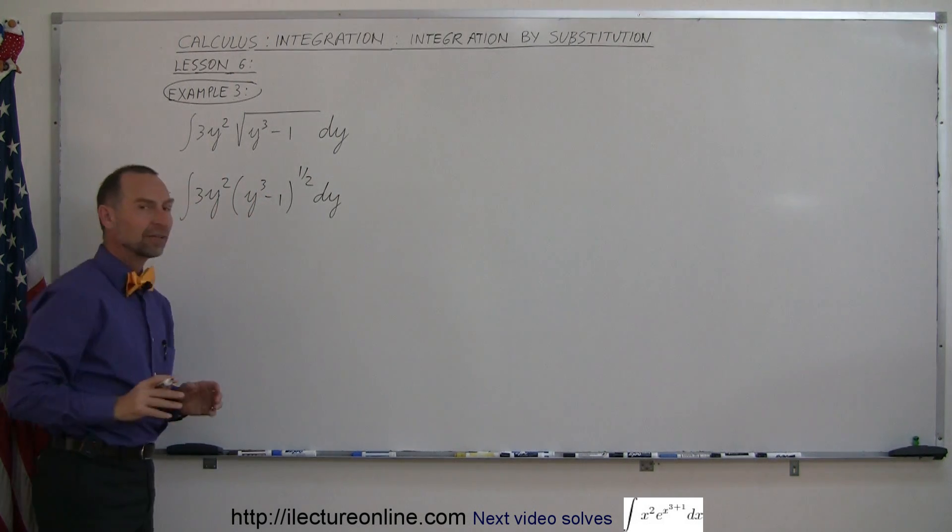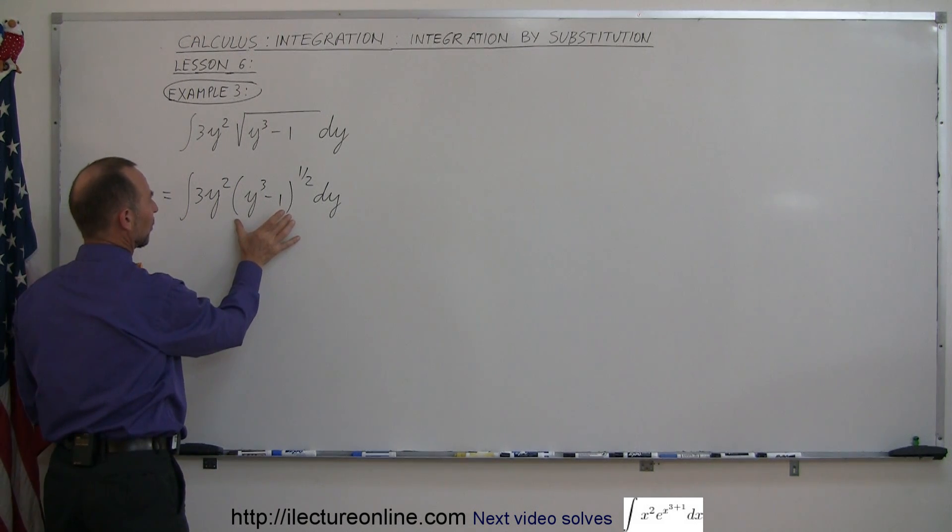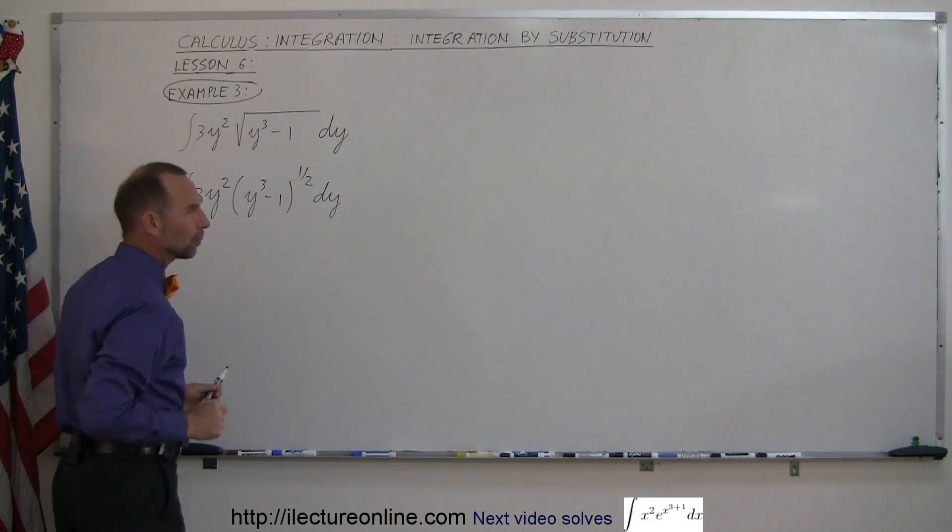Now, if you have a little bit of insight, after you do this for a while and you see what's inside the parentheses here and it's raised to the 1 half power, if you take the derivative of what's inside the parentheses you get 3y squared and notice there's a 3y squared here and you have a dy there.